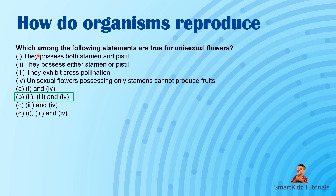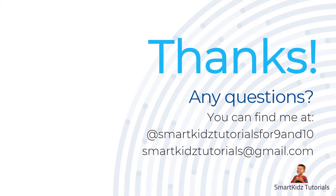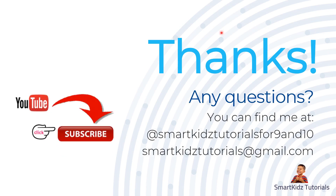Which of the following statements are true for unisexual flowers? They possess both stamen and pistil — false. They possess either stamen or pistil — true. They exhibit cross-pollination — true, because the same flower does not have both stamen and pistil. Unisexual flowers possessing only stamens cannot produce fruits — true, because they need the female part. So statements 2, 3, and 4 are correct. With this we complete this short MCQ session on 'How Do Organisms Reproduce.'